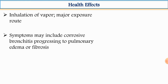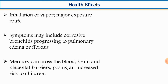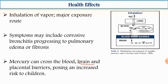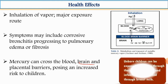Health effects of mercury: inhalation of vapor includes pulmonary diseases. Mercury can cross the blood-brain barrier and affect the brain — a very delicate organ — and also affects children. Unborn infants can be exposed to mercury through their mother's blood, and infants can be exposed through breast milk. Acute health effects from immediate contact with mercury include cough, sore throat, diarrhea, and headache. Chronic effects are very dangerous: failure of kidney, nervous system, and muscles.